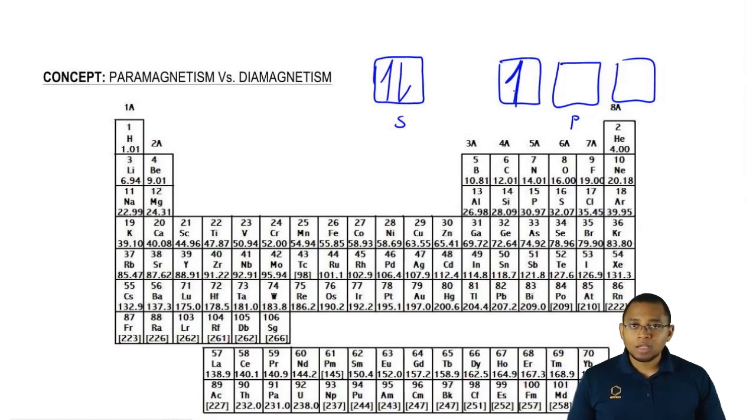Elements or ions with unpaired electrons can be influenced by magnets. That's where the name comes from, paramagnetism.